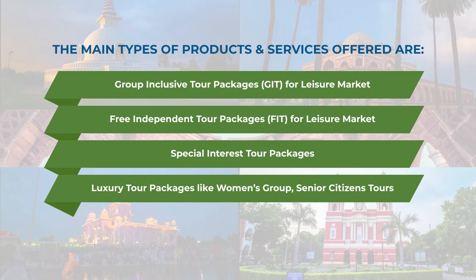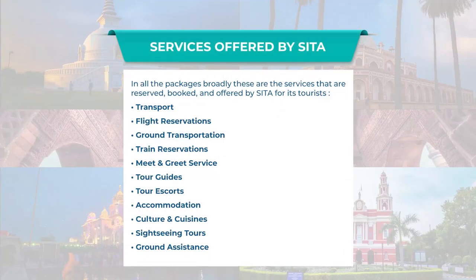On all four types of packages, Sita offers a broad set of services. As an inbound company, Sita takes care of tourists from the moment they reach the destination until they return home. Services include flight reservations, ground transportation, train reservations, meet and greet service at the airport or railway station, knowledgeable tour guides and tourist escorts, accommodation booking, culture and cuisine experiences, unique sightseeing tours, and other ground assistance required by tourists.